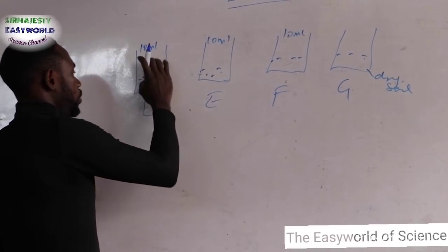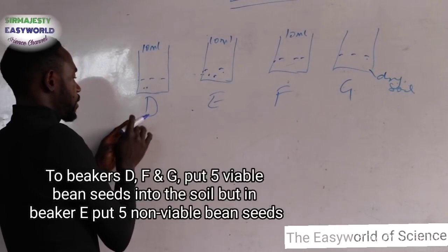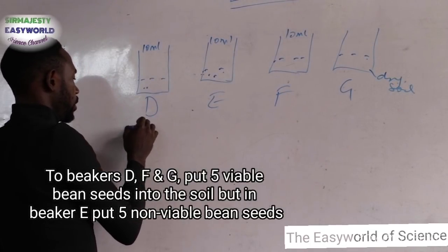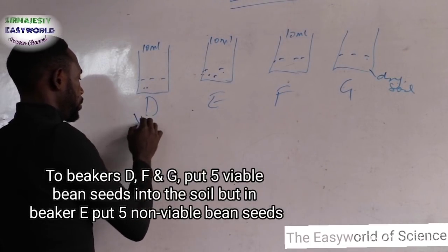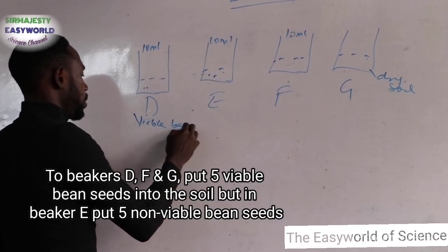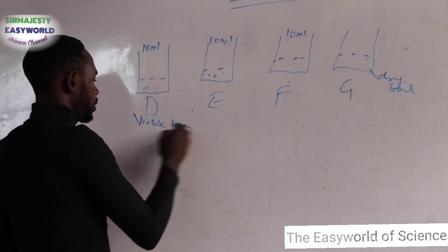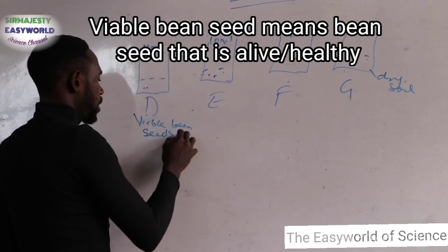There is a set of specimens where you are required to get four beakers labeled D, E, F and G. You are asked to fill it with a given amount of soil, about 100 to 150 ml each. You'll get dry soil. Then to D, E, and F, you add 10 ml of water each. This one, G, should be only dry soil.